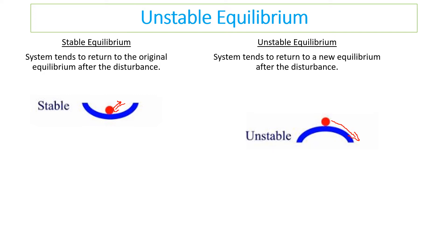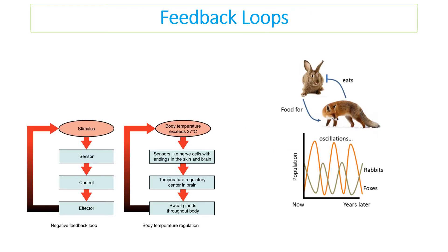Living things and the environment tend toward stable equilibrium because they are more likely to return to the original position. This is achieved through feedback loops.